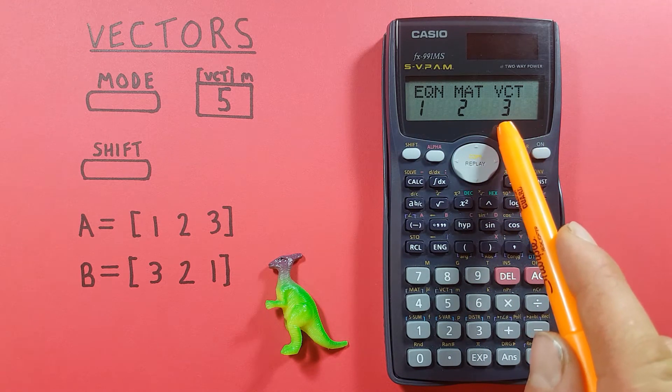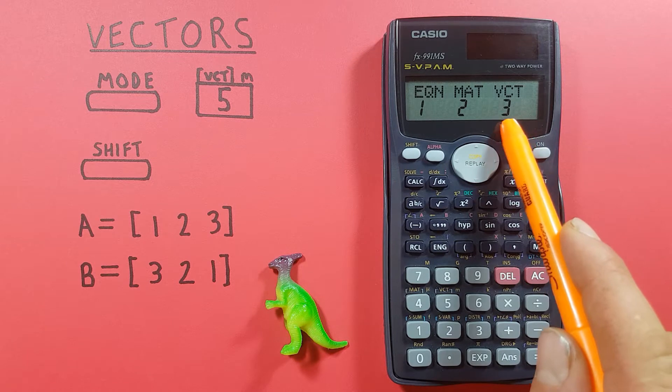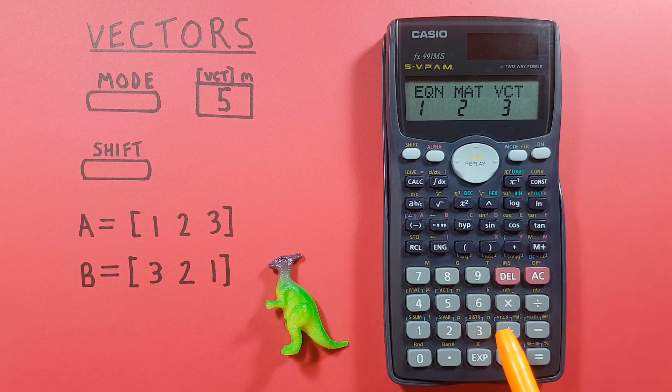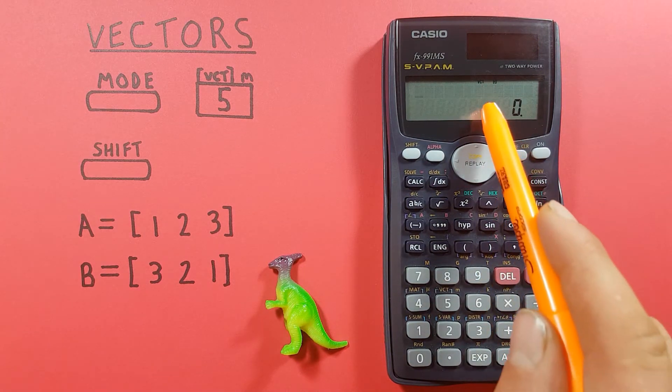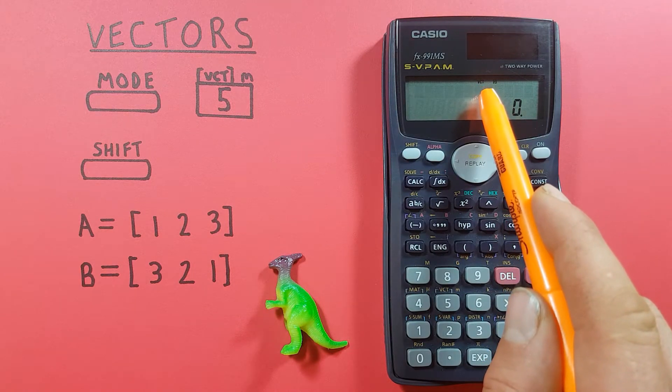Here we see the third option is VCT. That's the mode we want so we'll press 3 and you should see a VCT in the top of the screen right here now.